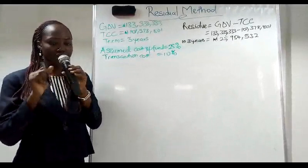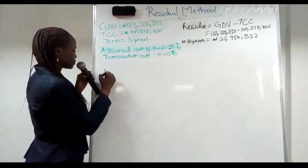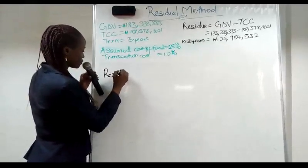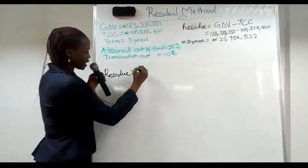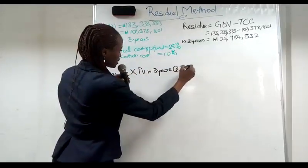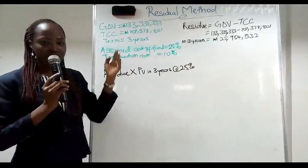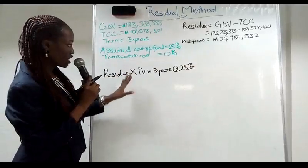To get our site value we need our budget. But before that, to calculate our budget is residue multiplied by present value in three years at 25%. Present value here is to bring it down to the present amount that we are going to use.